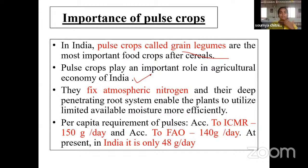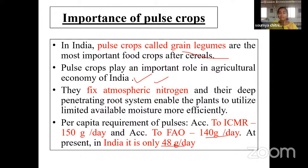Yet the productivity of pulse crops is very low when compared to other countries. They fix atmospheric nitrogen and because they have a deep taproot system, they can absorb moisture even from deeper layers of the soil. The per capita requirement of pulse, according to ICMR, is about 150 grams and according to FAO, it is about 140 grams. But in the country, it is only available up to 48 grams per day.